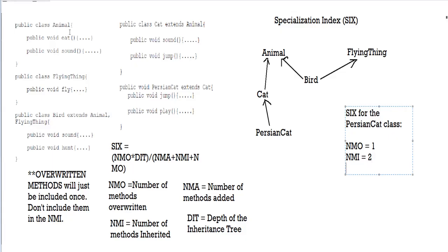Next we have NMA — number of methods added. If you look at the Persian cat class, the play method hasn't been included in cat and hasn't been included in animal. It doesn't overwrite anything and it's not inherited. So play is simply added. The number of methods added for Persian cat is equal to 1. For DIT, there are 2 arrows going to the uppermost parent class, which is animal — one from Persian cat to cat, and one from cat to animal — giving us DIT equals 2.